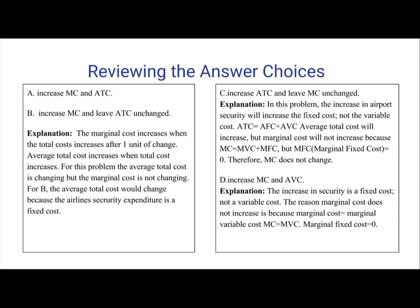That leaves answers C, D, and E. Answer C: Increase ATC and leave MC unchanged. When there's a fixed cost that increases, marginal cost does not change. The increase in airport security increases the fixed cost but not the variable cost. Average total cost will increase, but marginal cost will not increase, because MC equals MVC plus MFC, and marginal fixed cost equals zero. Therefore, C is a very strong answer choice.